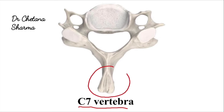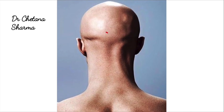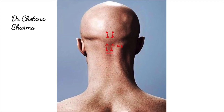For palpation of cervical vertebrae from behind, you need to stand behind the patient. Place both thumbs on the occipital bone and slide down your thumbs. At the lower end of the occipital bone, you will feel a sudden depression on the median plane. This is the atlas vertebra because the atlas doesn't have any spinous process. When you slide down your thumbs further, you will feel the spine of the axis vertebra.